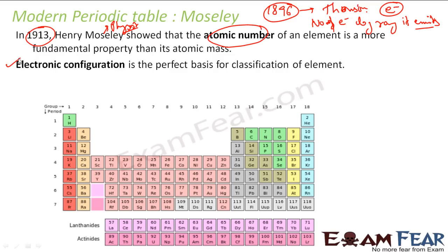Electronic configuration is a perfect basis for classification of elements. All elements in a particular period will have similar electronic configuration. The electronic configuration of a particular element is the perfect basis for classification.